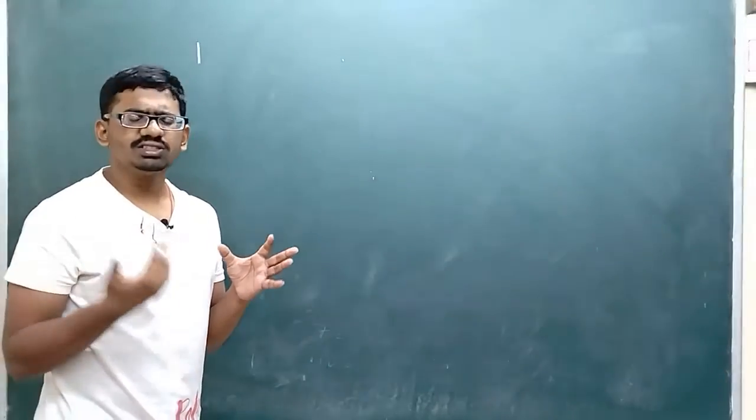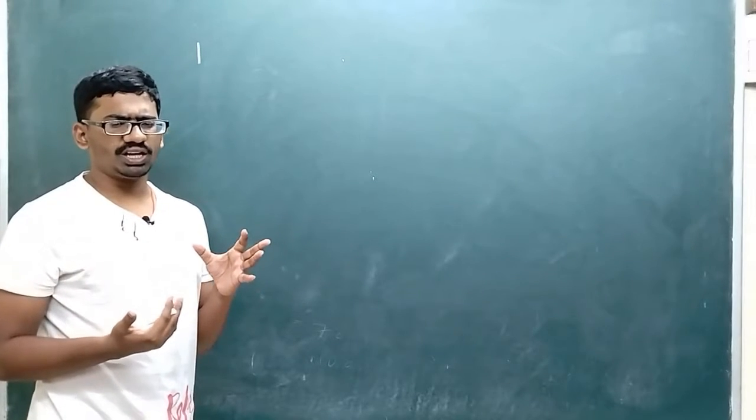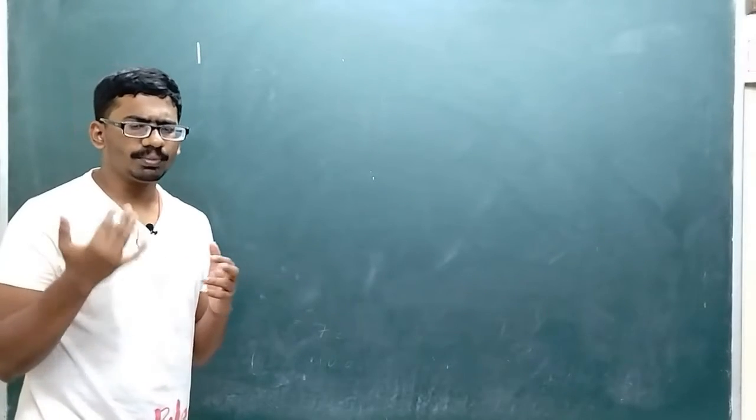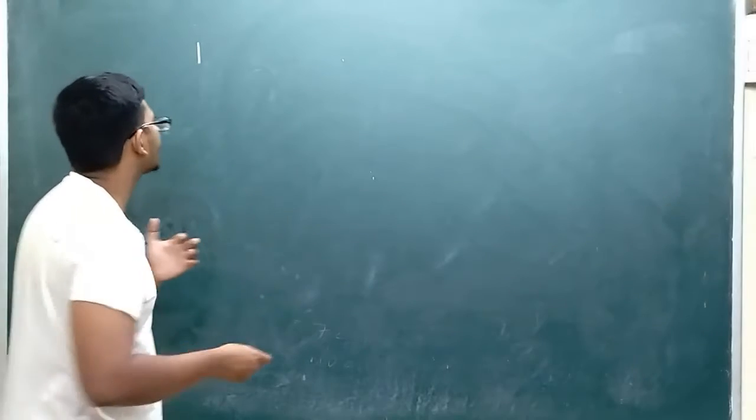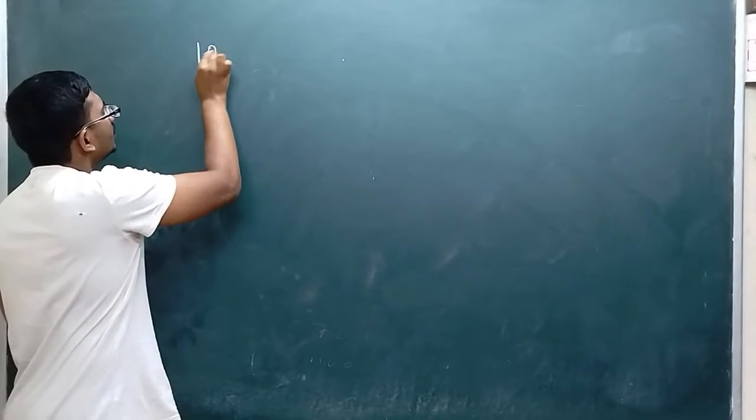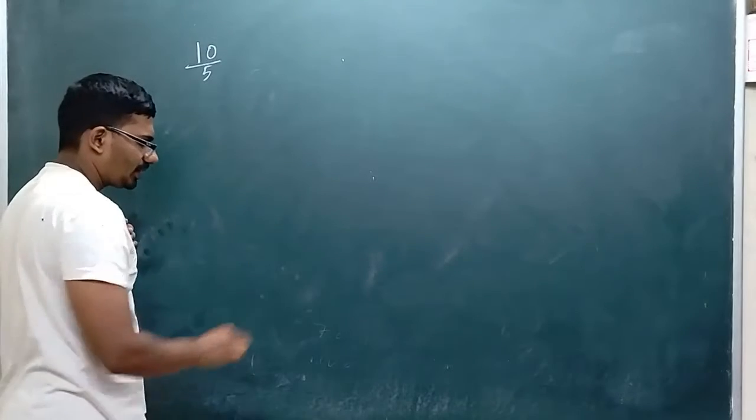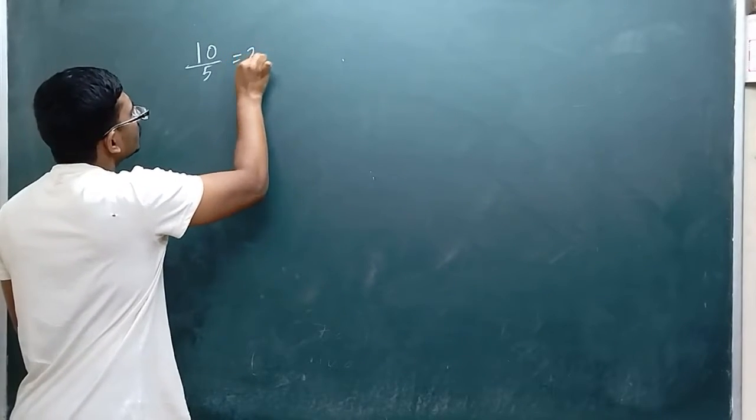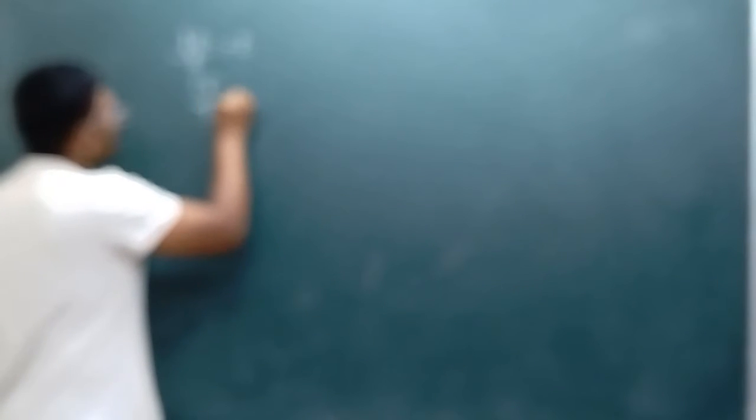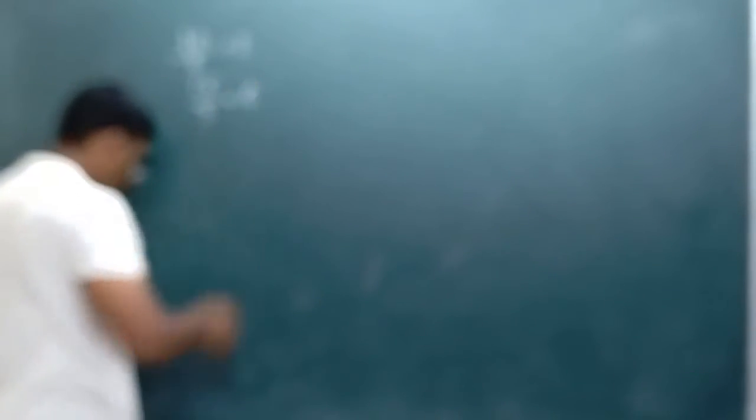When the answer is above one after you simplify, it is said to be an improper fraction. For example, 10/5 - the answer is 2. Or 15/3 - the answer is 5. When you get answers like this, these are said to be improper fractions.